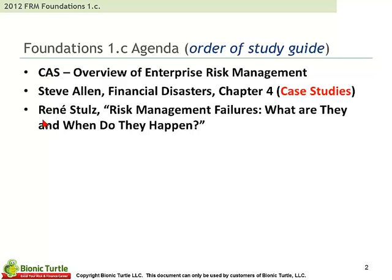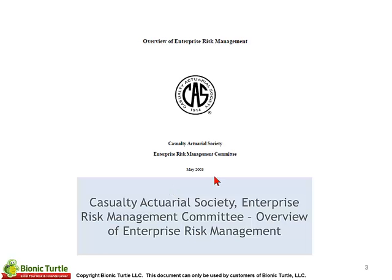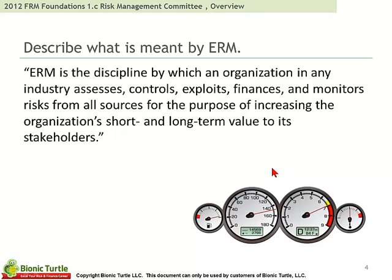These last three readings repeat from last year, and the nature of them is that there are just some lists, memorization, and qualitative concepts. I don't have any shortcuts for some of these, except just to bite the bullet and process some of these itemized lists. So let's take a look at the Casualty Actuarial Society and an overview of enterprise risk management.